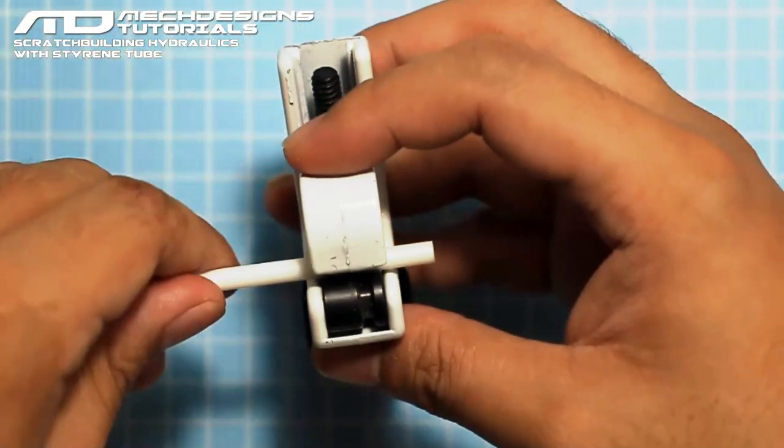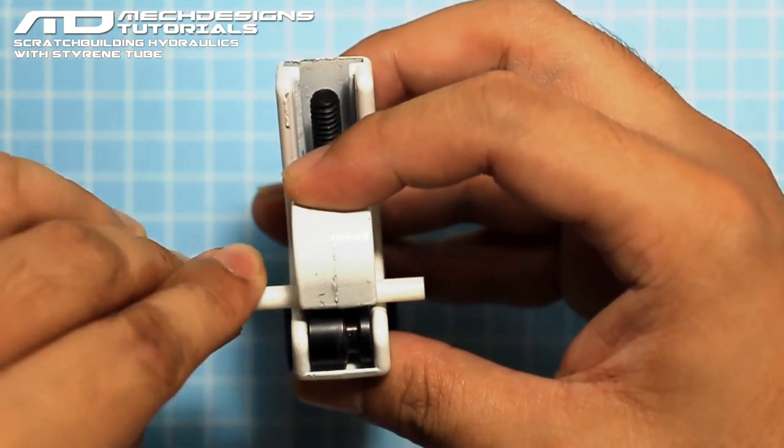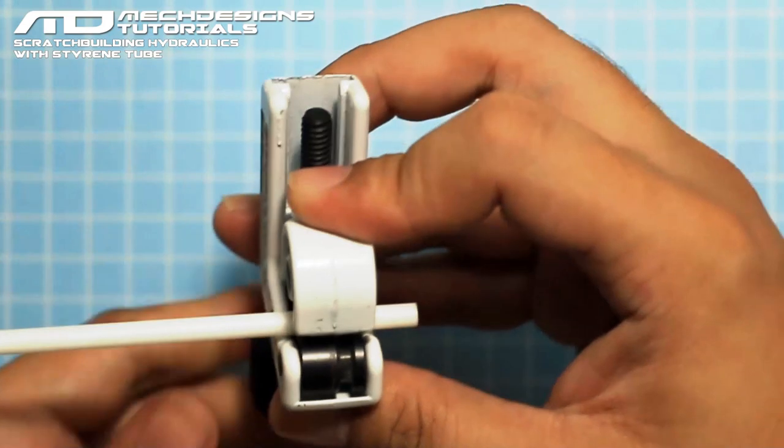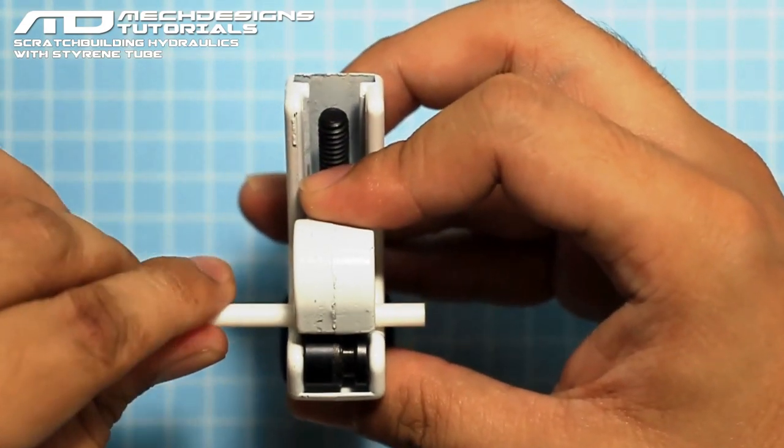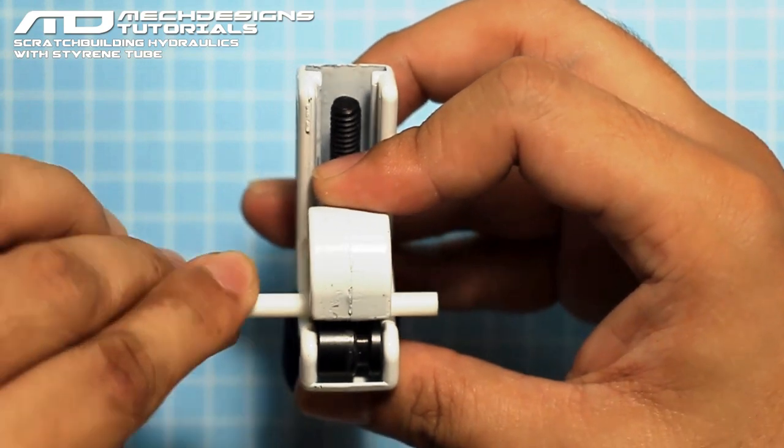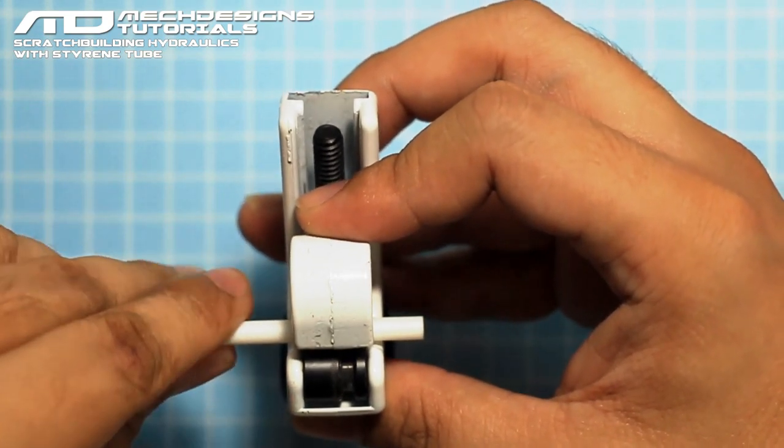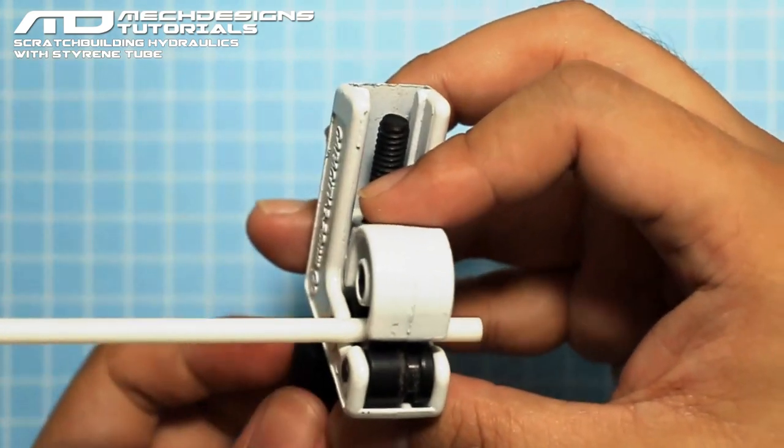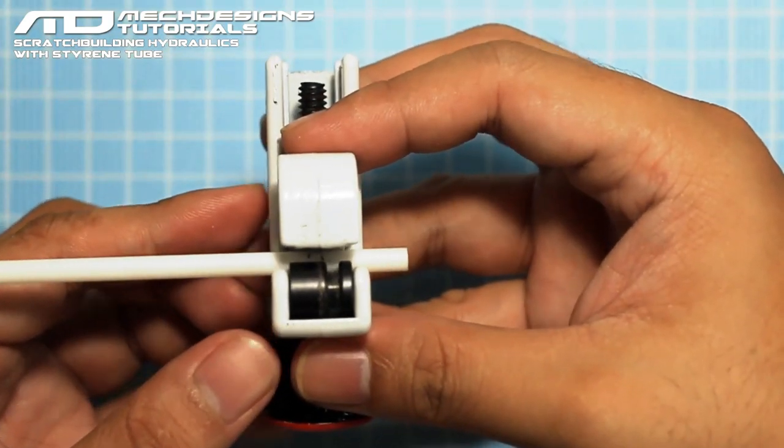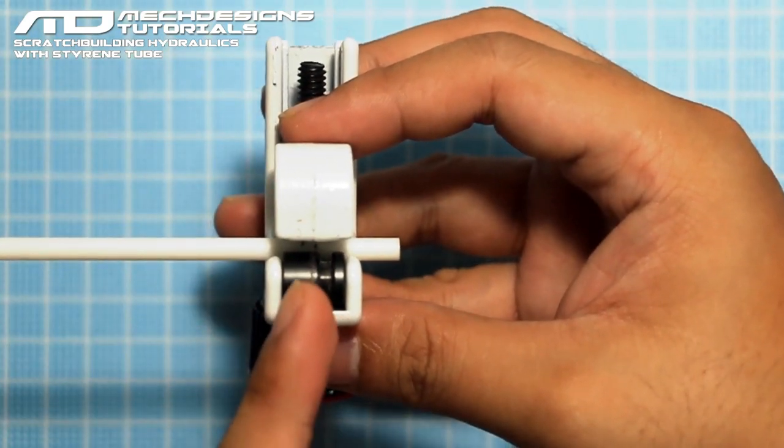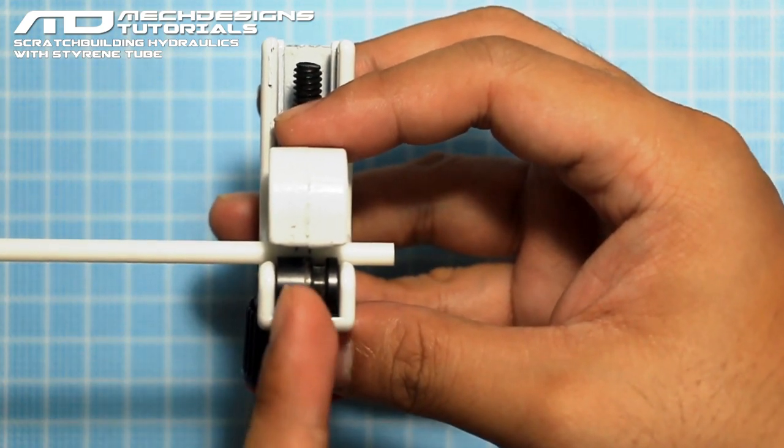Then we're going to turn around the styrene tube and just leave a mark on the material, but we're not going to cut it through. We're just going to leave a mark. So as you can see, I started first on the line inside instead of the other line that is pointing outward.